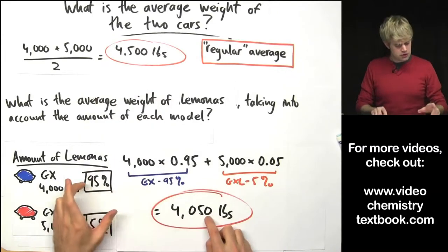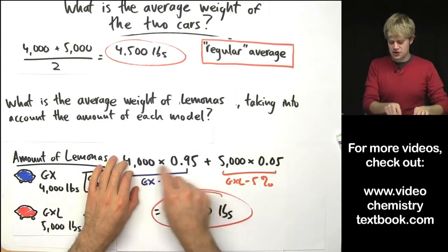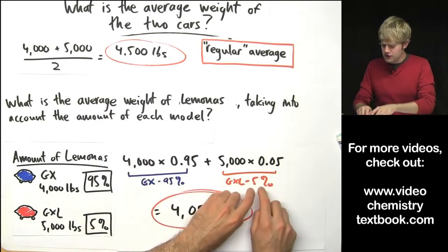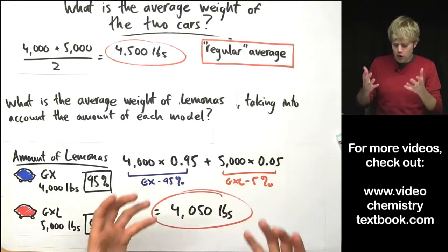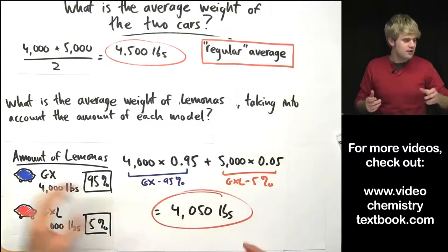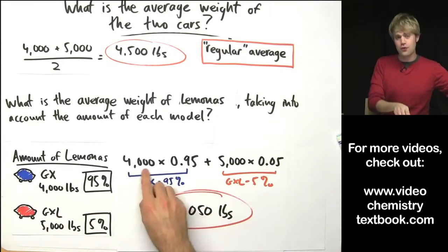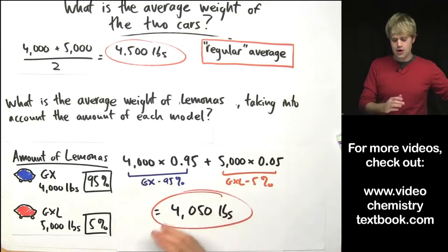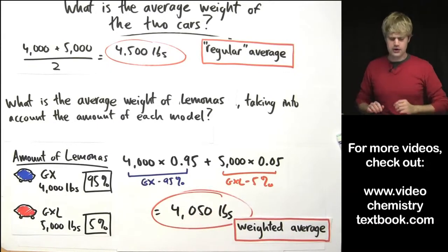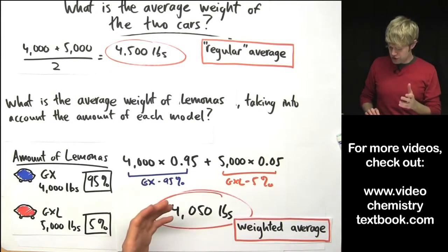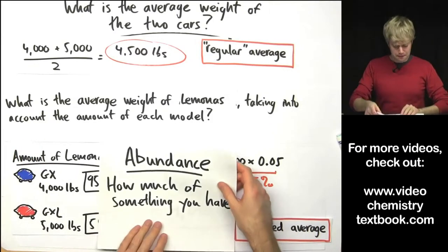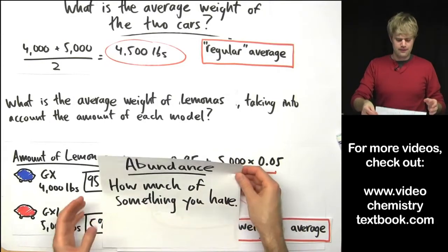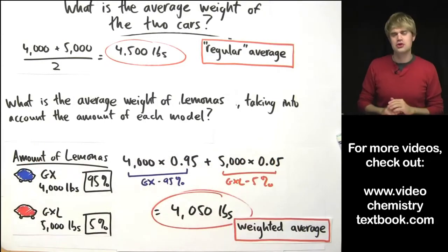The average is much closer to the weight of the GXs and because we have very few of the GXLs, their weight doesn't have a whole lot of impact on this final average. I mean, it's higher than 4,000 but it's not right in between. And so, this calculation is what we refer to as a weighted average where we take into account the amount or the abundance of how much we have of each thing.